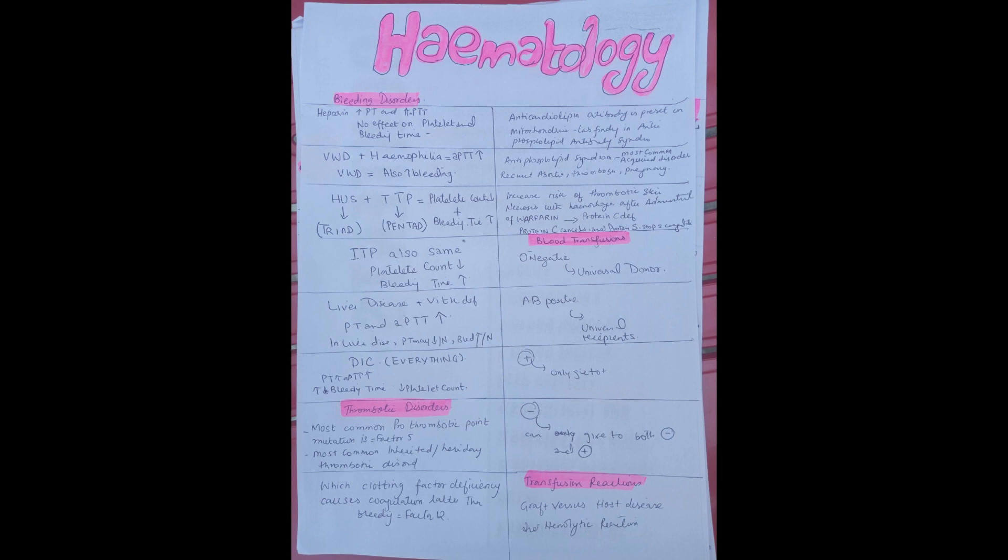Idiopathic thrombocytopenic purpura is also the same. It also causes decrease in platelet count and increase in bleeding time. The liver disease and vitamin K deficiency, in both PT and APTT increase.